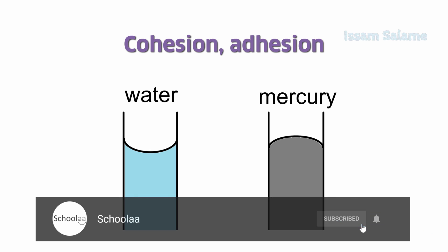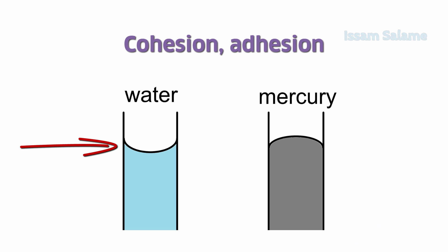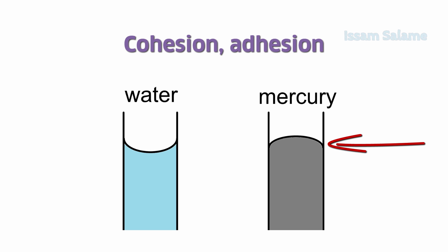If you place both water and mercury in glass tubes, you can see that the surface tension of water forms a concave meniscus, while the surface tension of mercury forms a convex meniscus. This is because the adhesion forces in water are stronger than the cohesion forces, so the particles next to the walls of the container are pulled upwards.